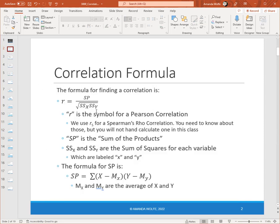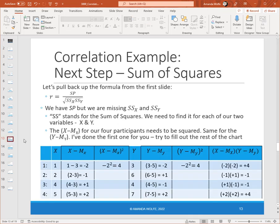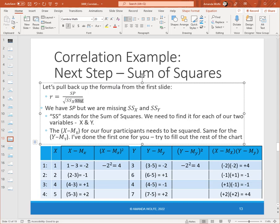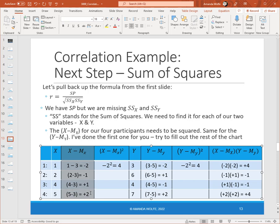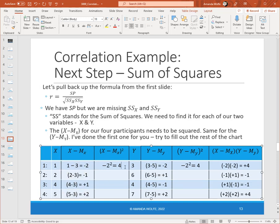If we go back to our original formula, what we're working towards, we now have the numerator. So the next step is to work towards the denominator. So working towards the denominator, we need a sum of squares for X and a sum of squares for Y. All we have to do is take that X minus the mean of X column and square it, and this column and square it. I've done the first one for you.